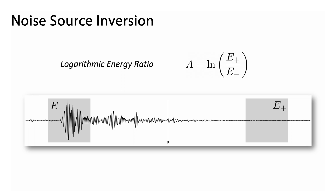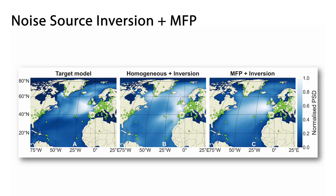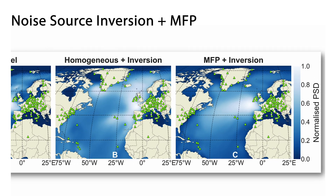Previously, we introduced an inversion method based on the logarithmic energy ratio measurement, which takes the ratio of energies in the expected surface wave arrival time windows. By using the MFP map as a starting model for the inversion, we can steer the inversion in the right direction and improve our final noise source maps. As this synthetic test shows, compared to a homogeneous starting model, the MFP starting model leads to a final inversion model that is closer to the target model.